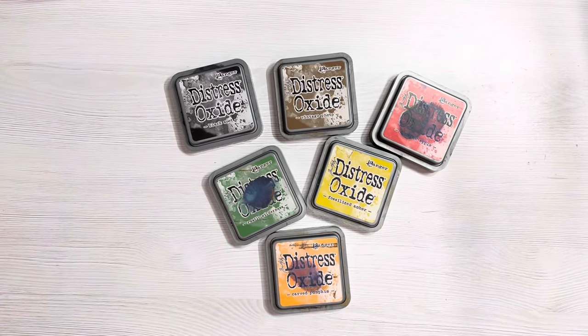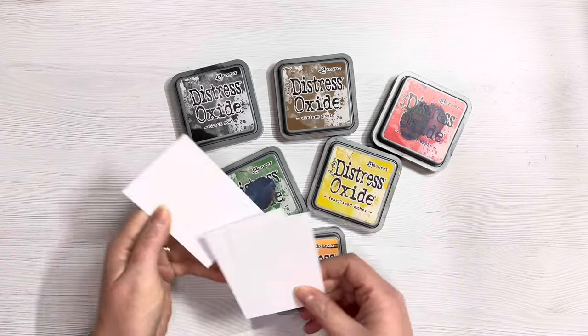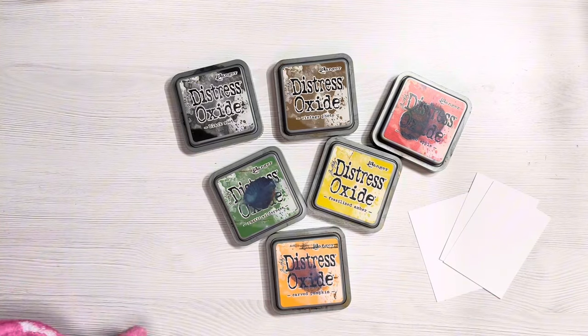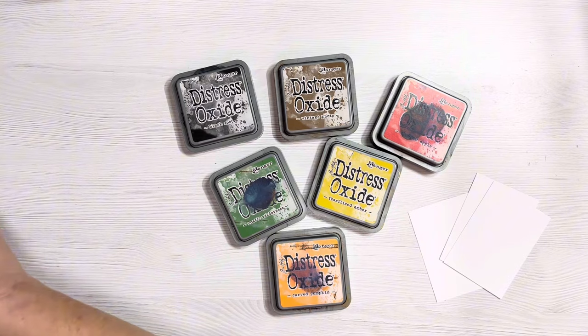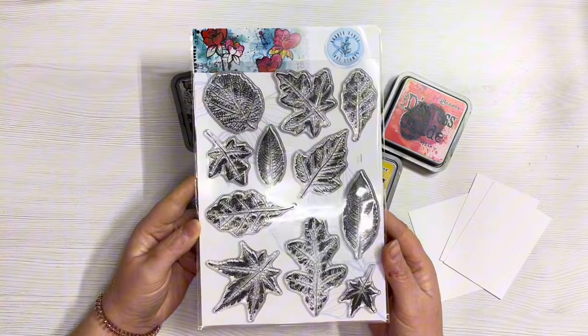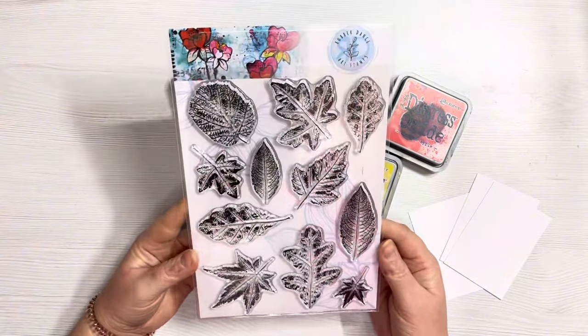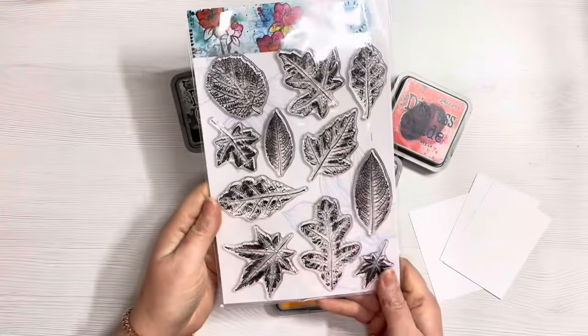Hi everyone, thank you so much for joining me today. In today's video we're going to be making some ATCs or Artist Trading Cards. I've already cut them down to size which is 2.5 inches by 3.5 inches. I'm going to be creating a Distress Oxide background and using these gorgeous Autumn Leaves stamp set from Rubberdance for the focal images.